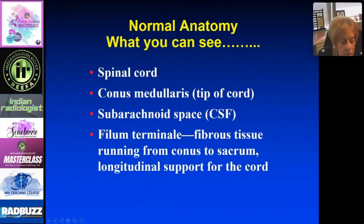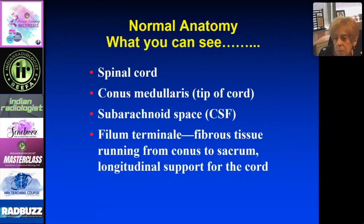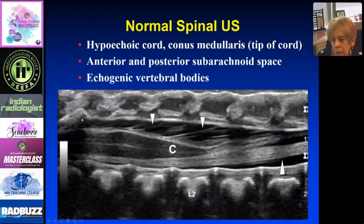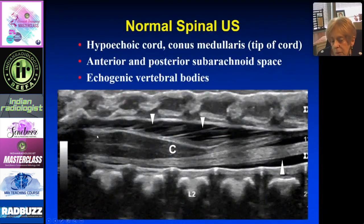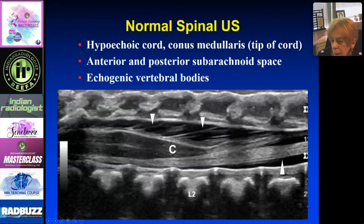On a normal spine ultrasound with the patient prone, you want to see the spinal cord, the tip of the cord — the conus medullaris — and the subarachnoid space. The spinous processes are not yet ossified. Here is the dura as a white line, the dorsal subarachnoid fluid, and the cord with its central echogenic complex. The cord tapers to the conus medullaris, with more subarachnoid fluid on the other side and the vertebral bodies below. Nerve roots can also be seen.